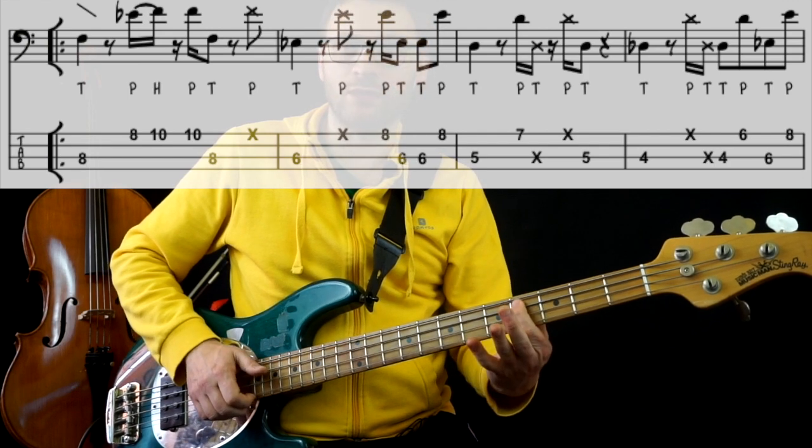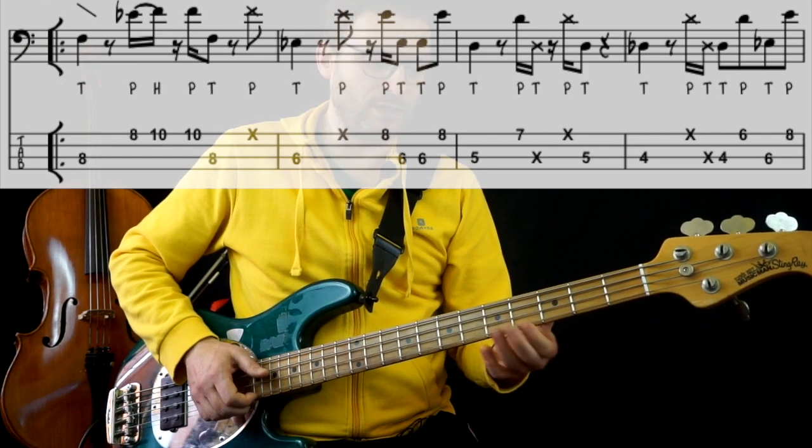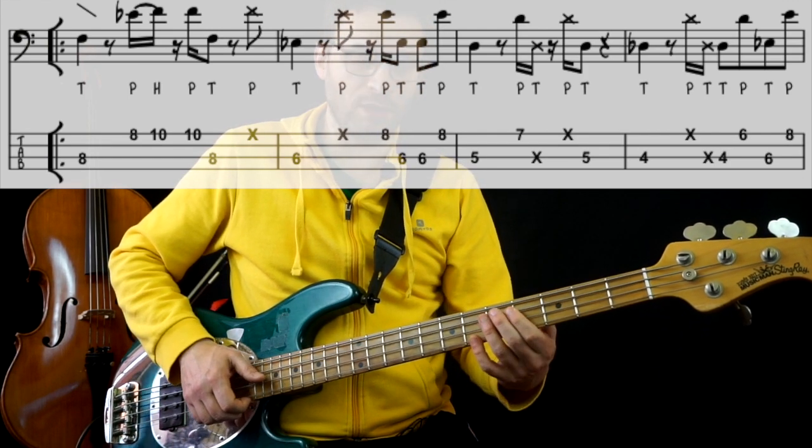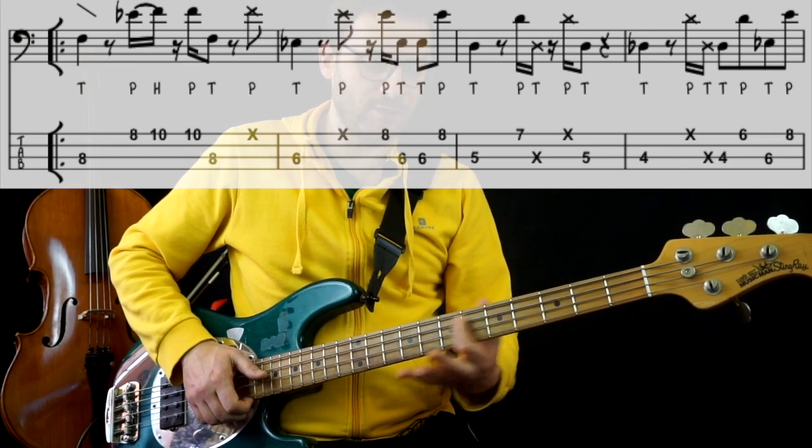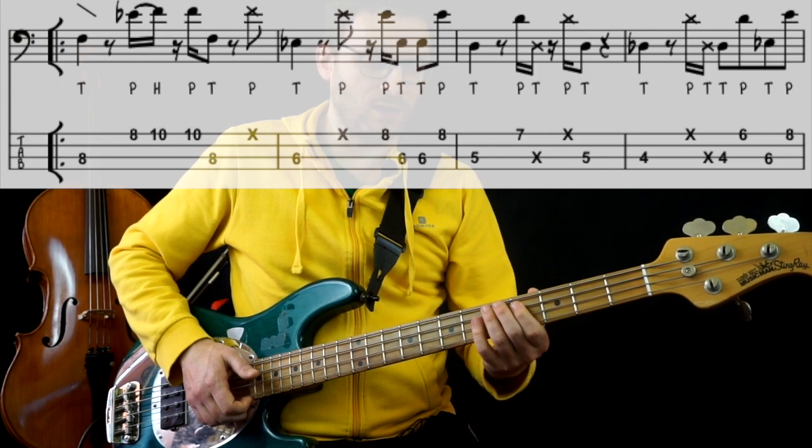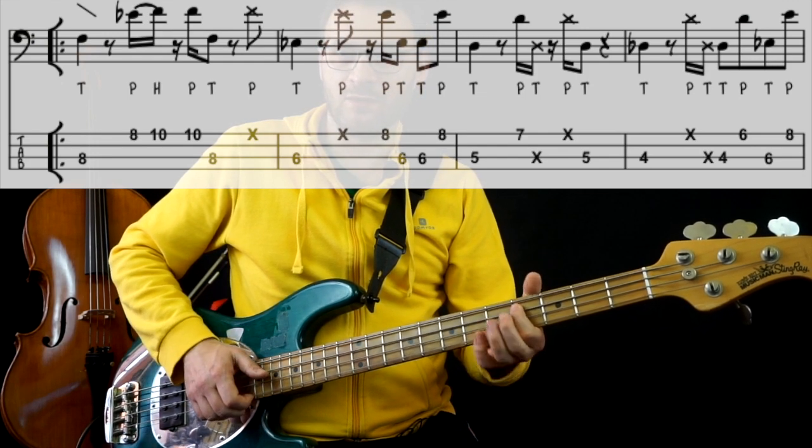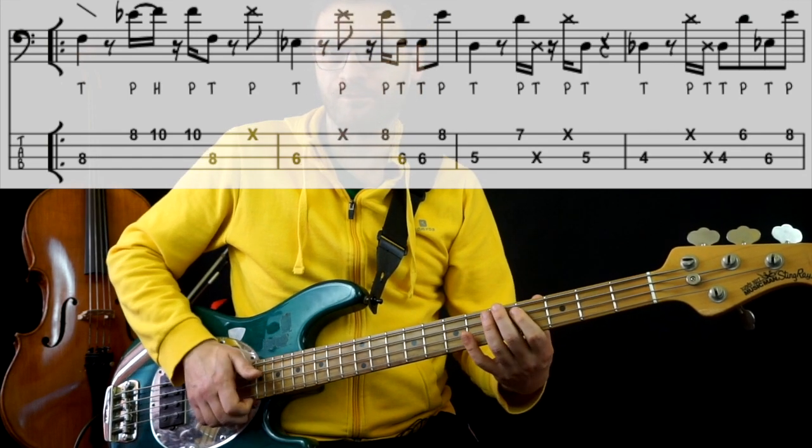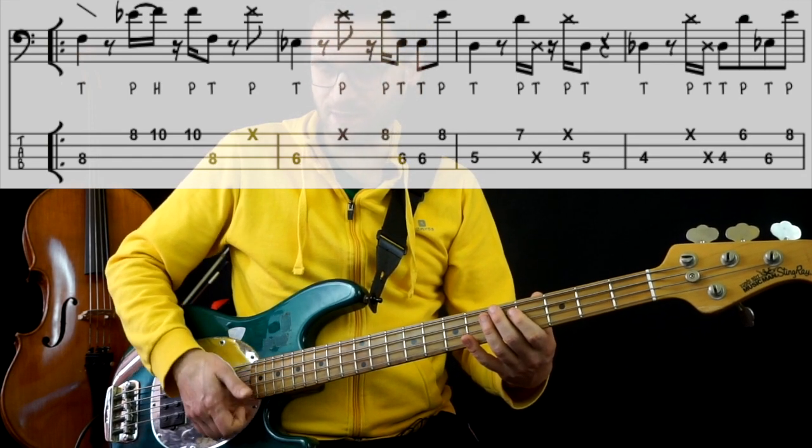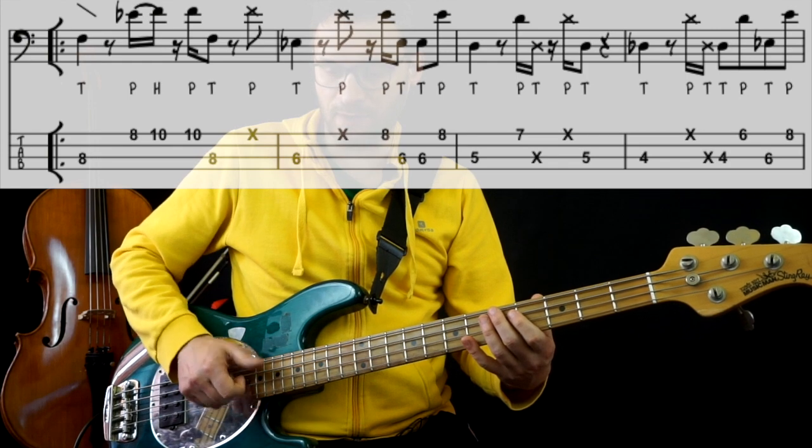Then we go to D♭, this is the simplest part. D♭, pause of an eighth. I need it to return to F, so I do a quarter note D♭. One, here two ghost notes, the first plucked and the second with the thumb.